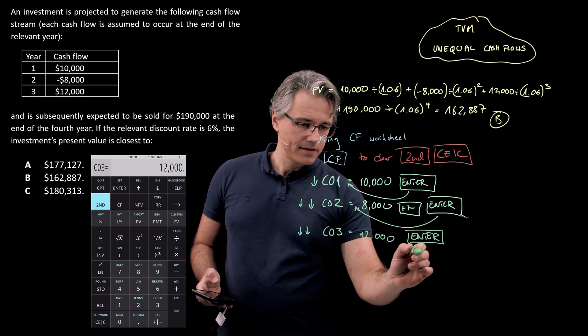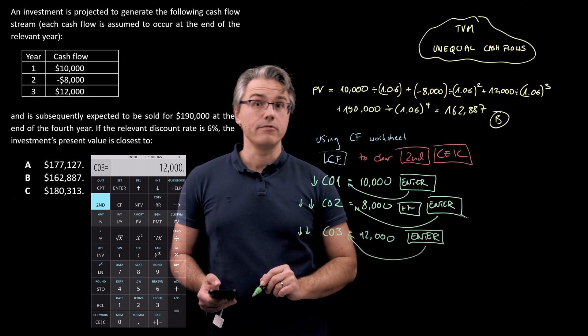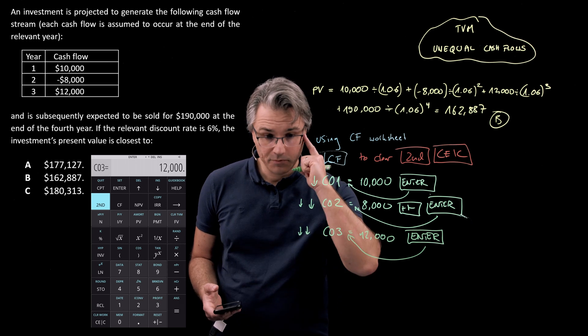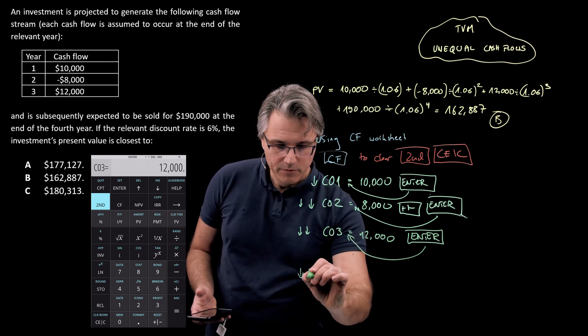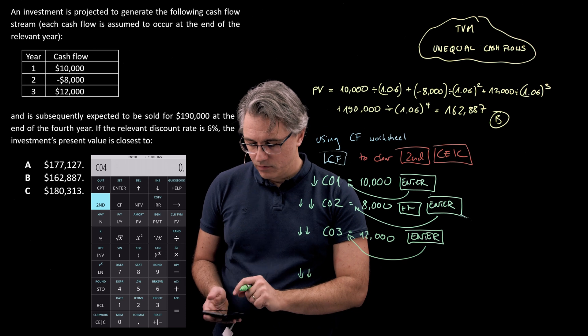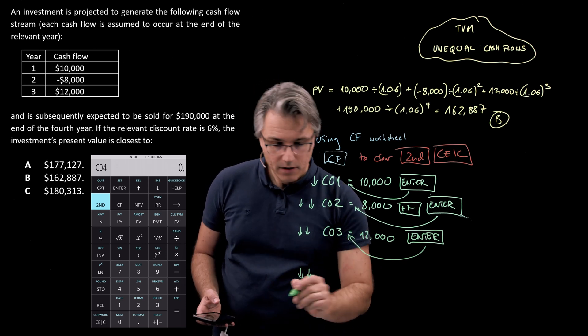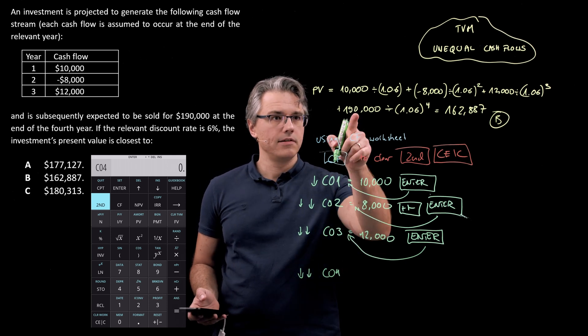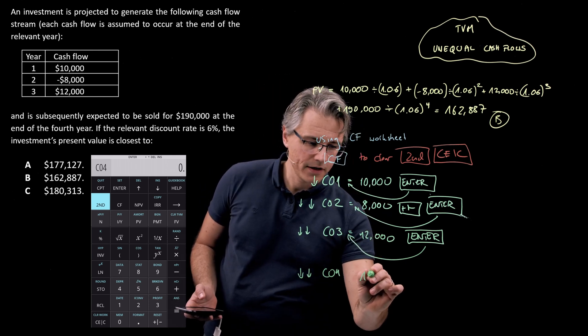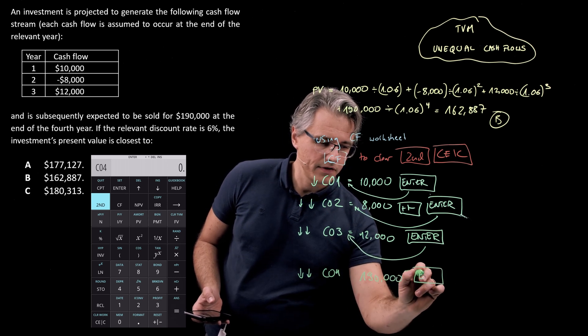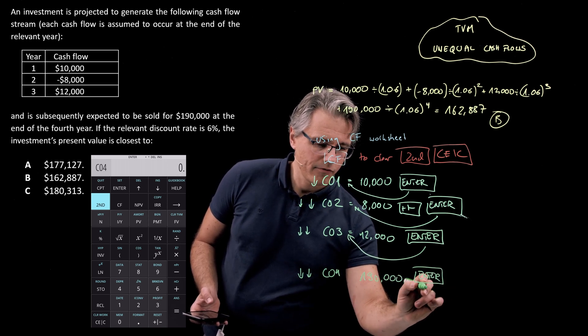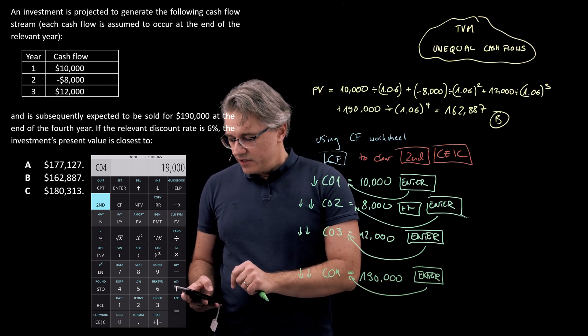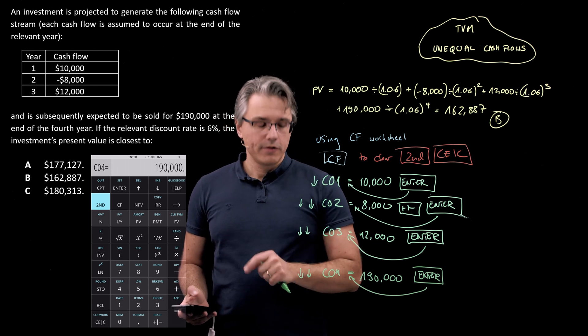and this makes the equals sign appear, which is just confirmation of the fact that your calculator has stored the relevant input. Press the down arrow twice, down arrow twice again. We are at C04, and we want to make this the big one, 190,000 over here. Obviously, follow this up with Enter, which will once again have the effect of presenting us with the equals key. Enter. OK, good.